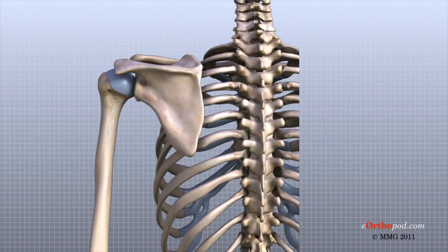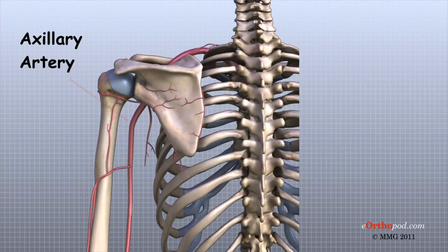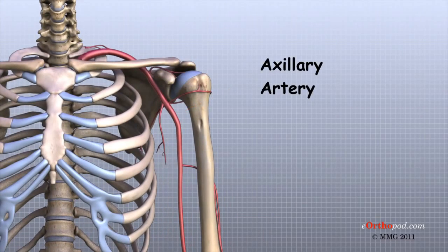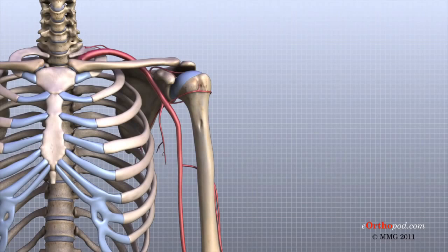Traveling along with the nerves are the large vessels that supply the arm with blood. The large axillary artery travels through the axilla — if you place your hand in your armpit, you may be able to feel the pulsing of this large artery. The axillary artery has many smaller branches that supply blood to different parts of the shoulder, giving the shoulder a very rich blood supply.